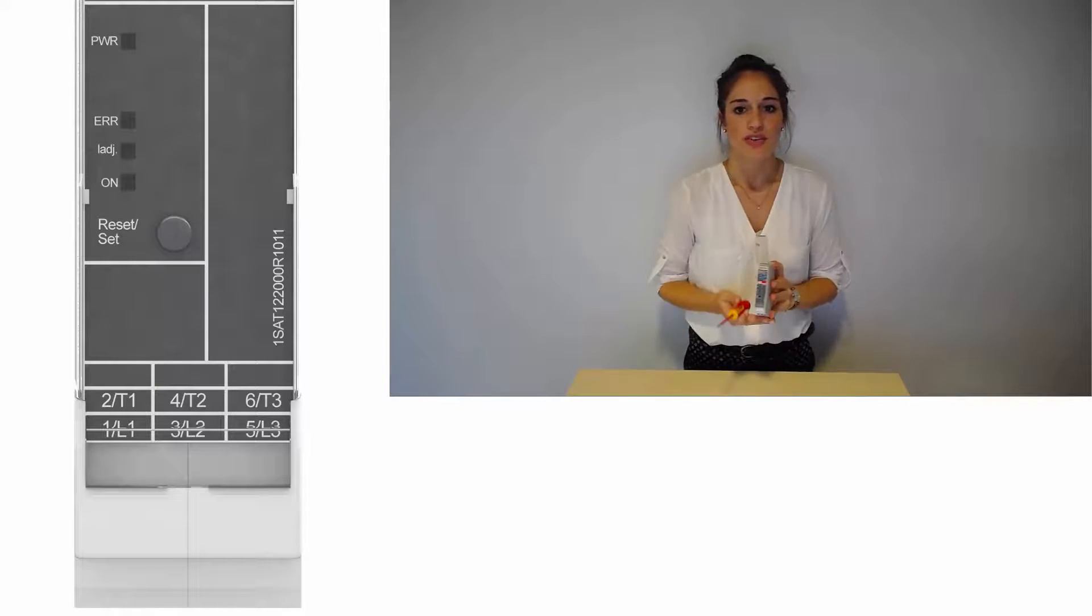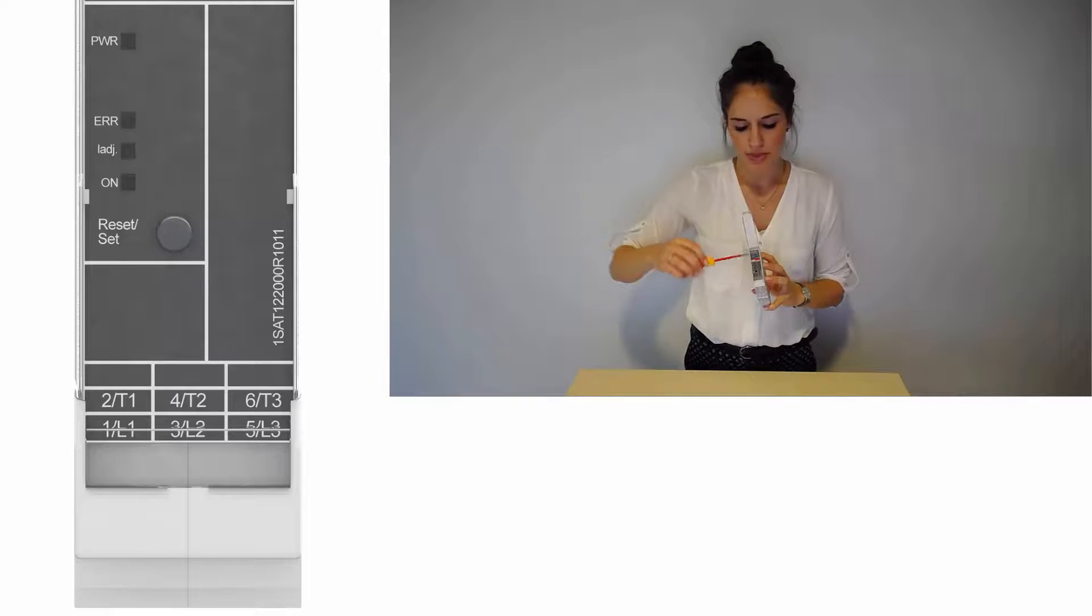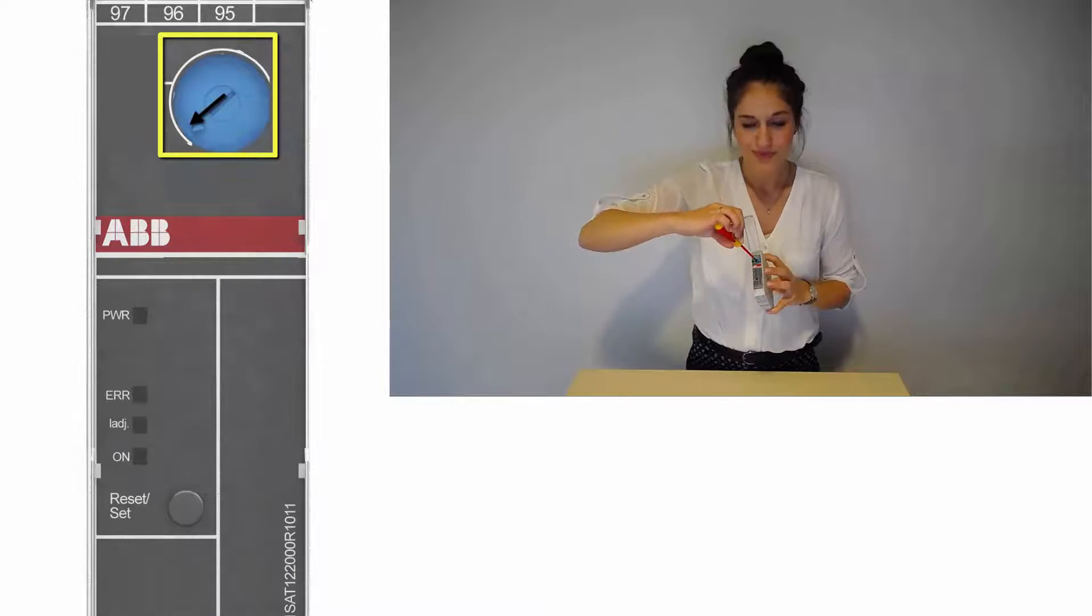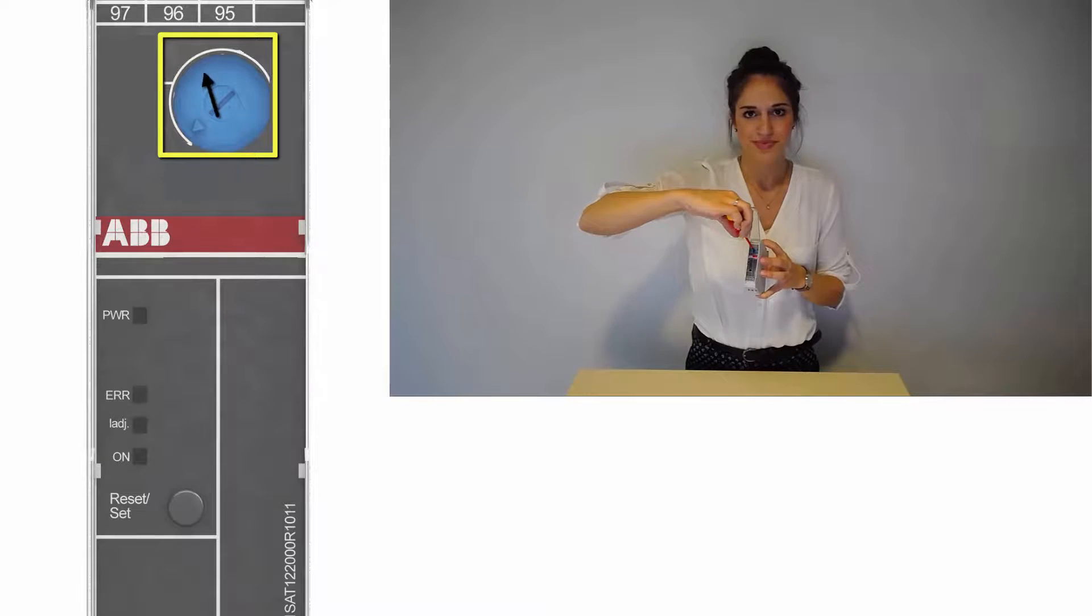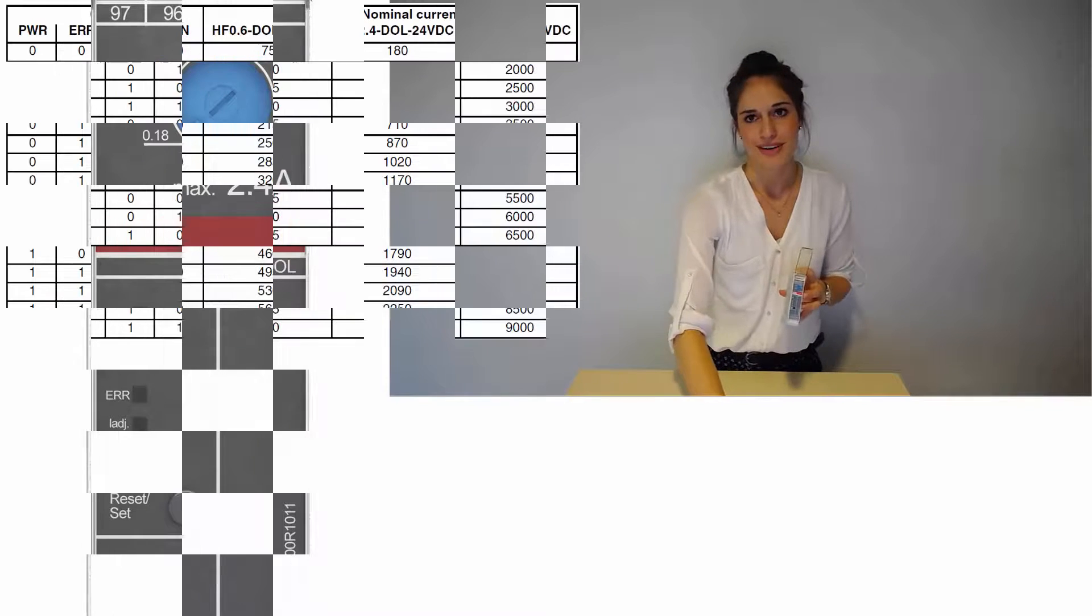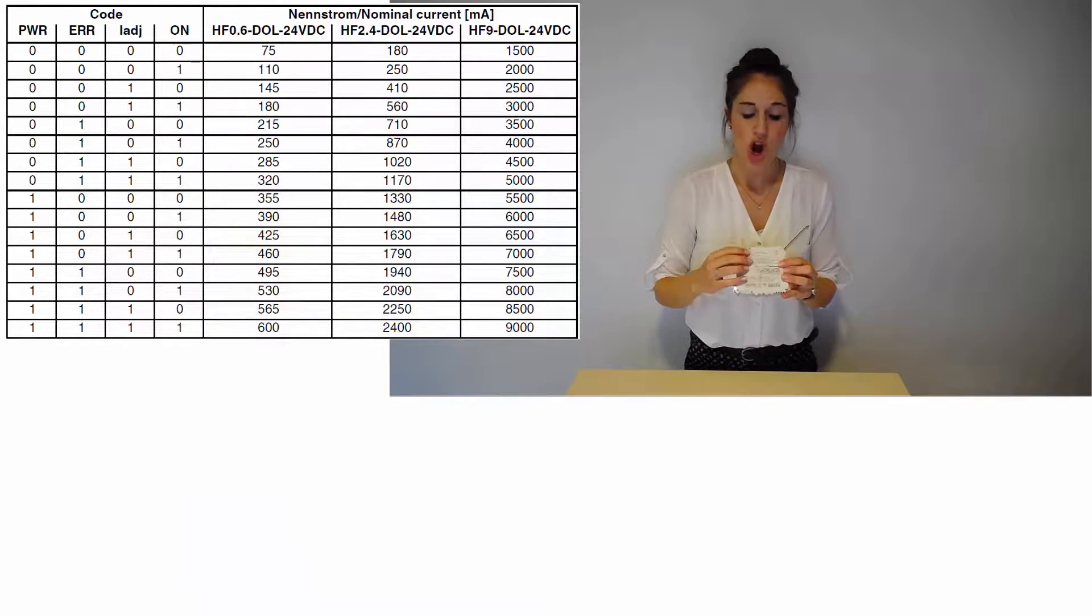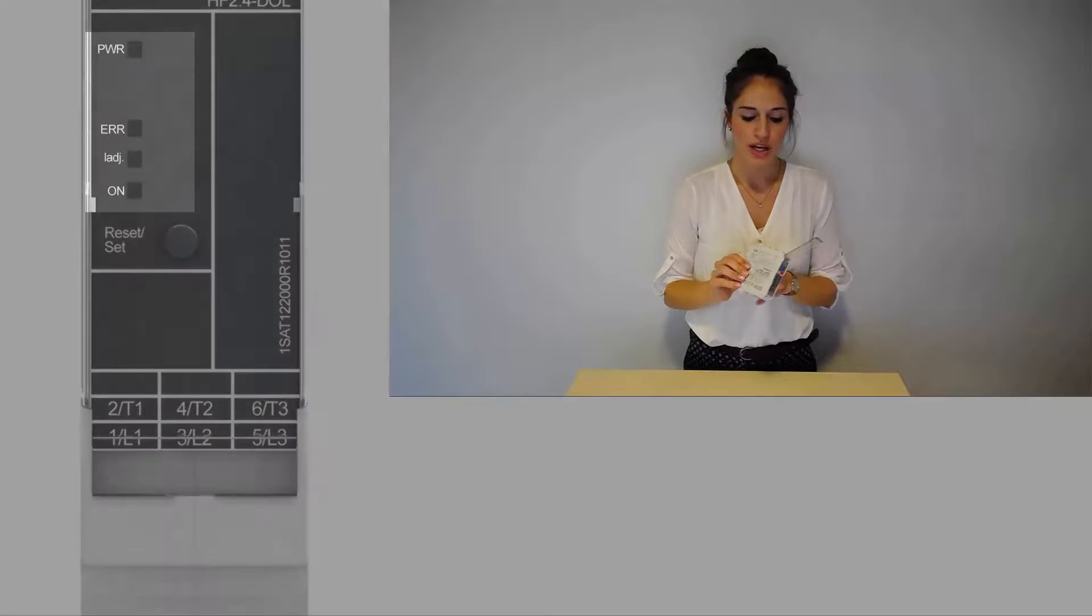Set the nominal current with the 240 degree potentiometer. The nominal current is specified in 16 stages as shown on the device and in the manual. The four LEDs show the set current.